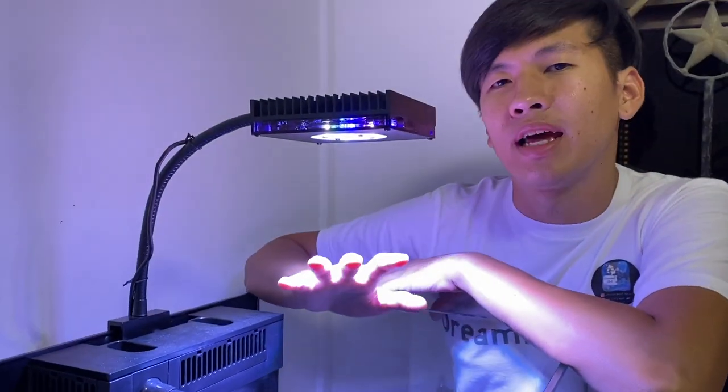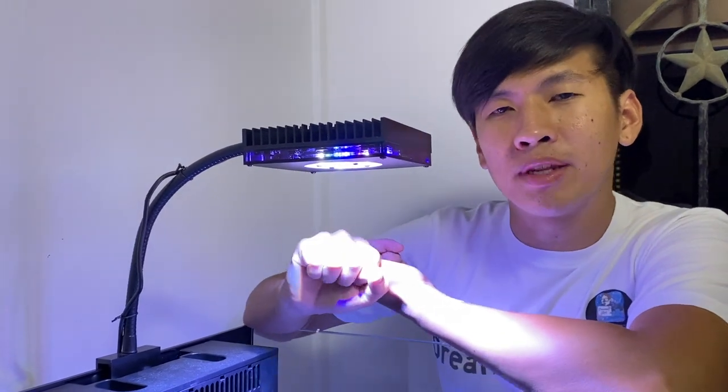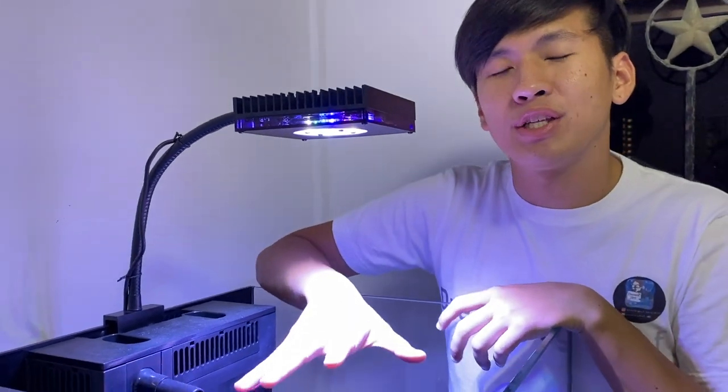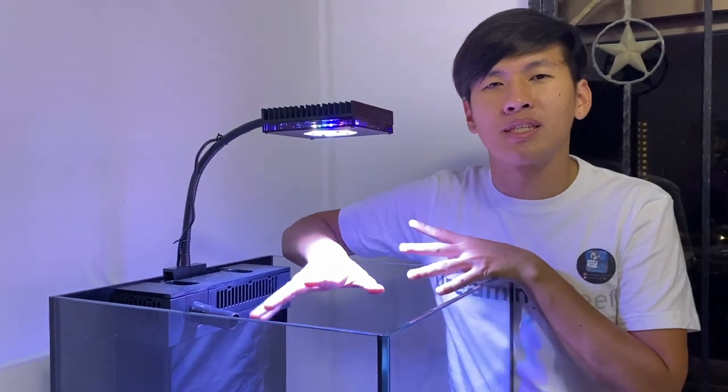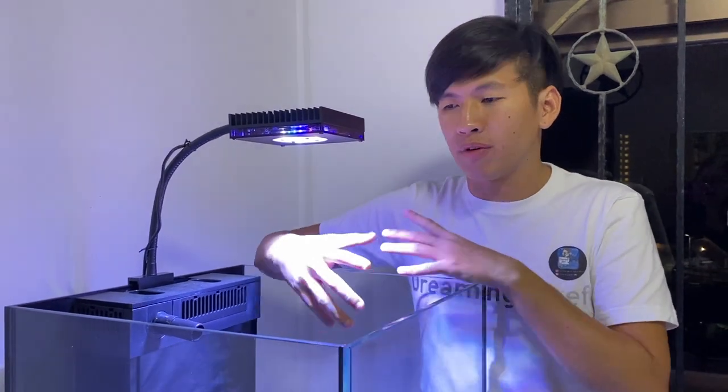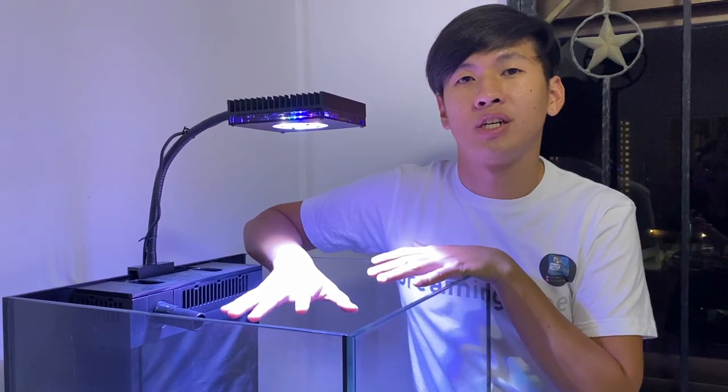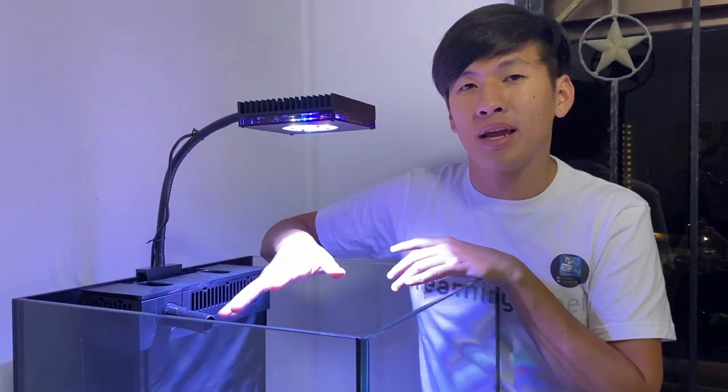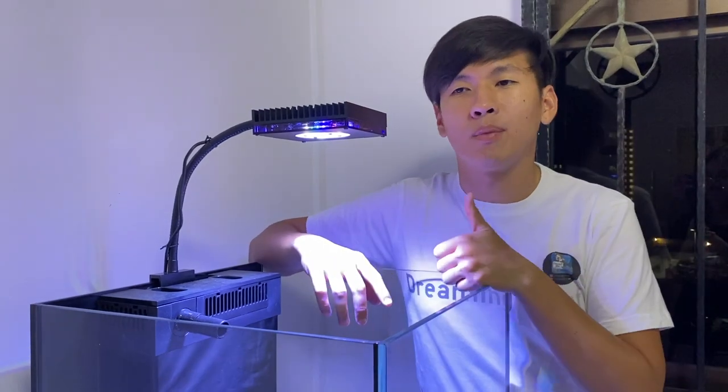I'm thinking of an anemone cube. I was thinking of going a full anemone cube, getting rocks up to this height and doing a full RBTA or a mix of bubble tips and a couple of Magnifica carpets. So a full RBTA tank with a harem of clownfish. If you've never seen a harem tank, I'll probably want to do this. This is one idea I want.